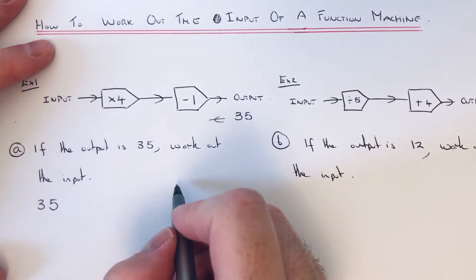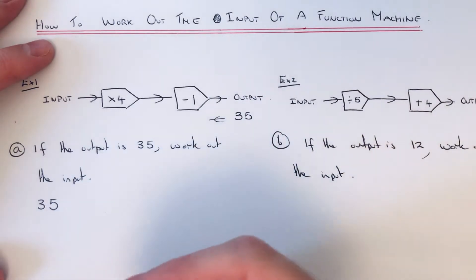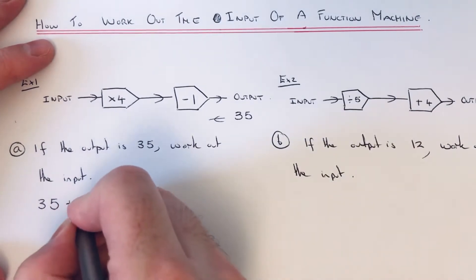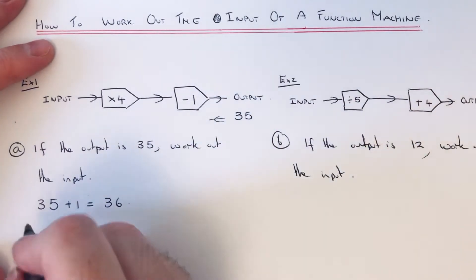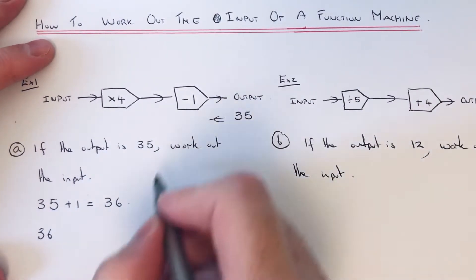The opposite to minus 1 is plus 1, because the opposite to takeaway is add. So we go 35 add 1, which is 36. So if we copy 36 to the next line.